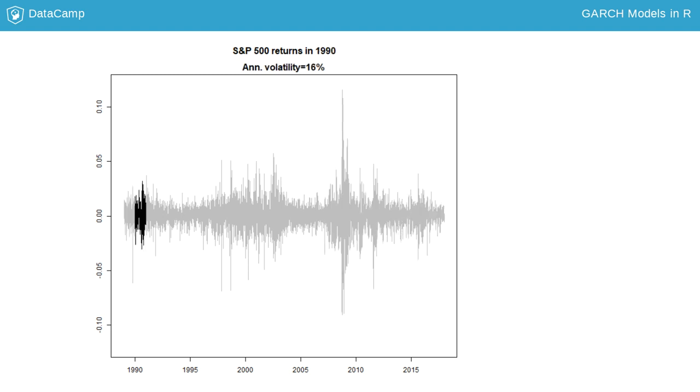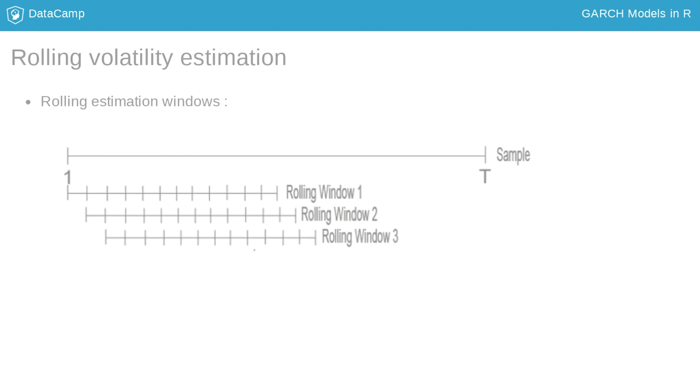They vary between a low of 7% and a high of 41%. In a similar fashion, you can compute volatility on rolling estimation samples. We then roll the sample through time by adding the most recent observation and removing the most distant one.